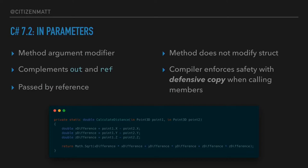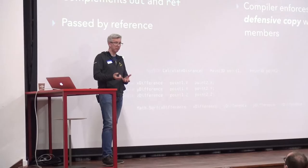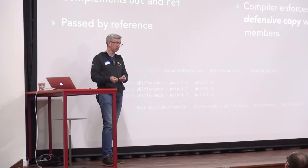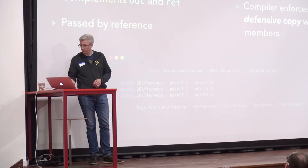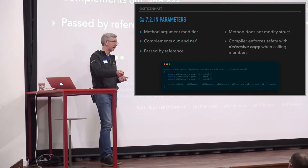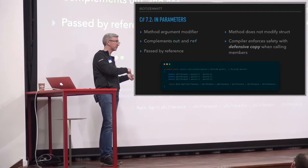`in` is a new one — it's similar, but it says the parameter is being passed by reference and the method can't touch it. So it's all about performance: passing by reference, but you can't modify it. The compiler enforces safety by creating a defensive copy. If you call a method on the reference you've passed in, the compiler says 'I don't know what that method's going to do — it might be mutating state, and the in parameter says you're not allowed to mutate state' — so it makes a defensive copy.